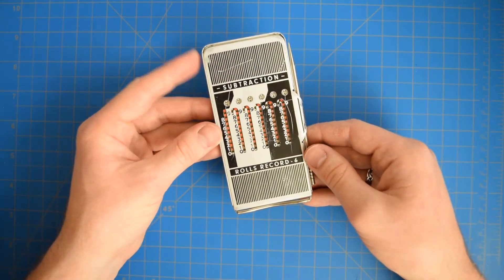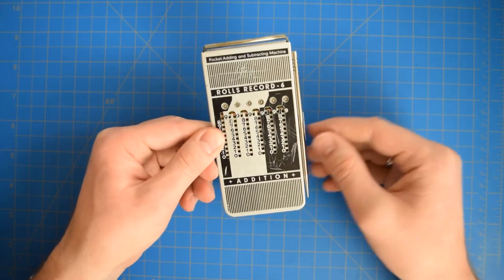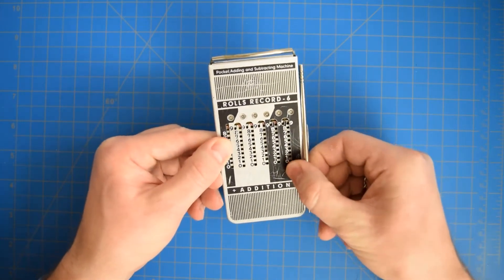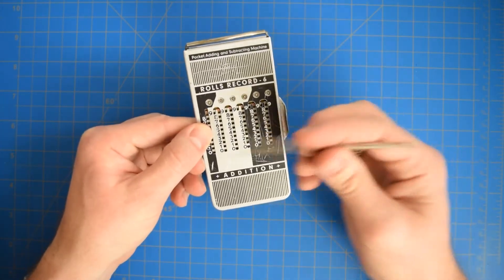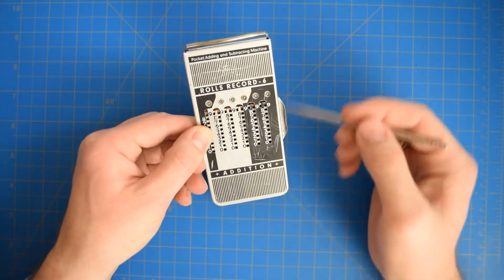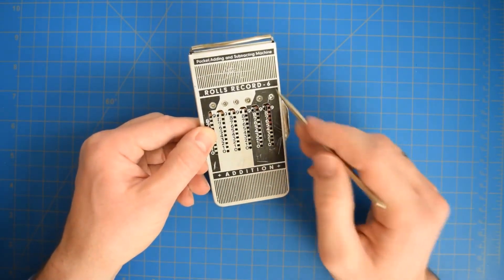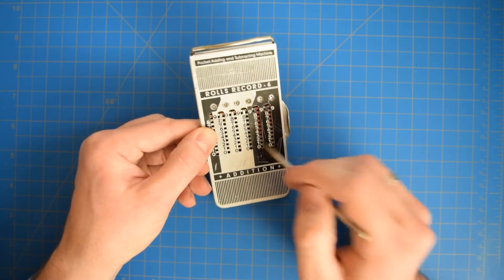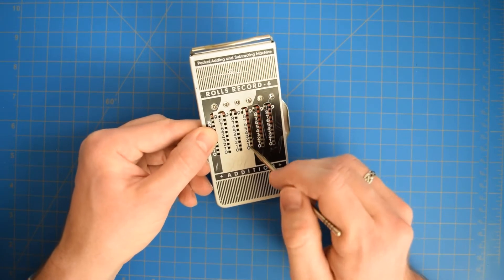The back here says subtraction, in the front addition, so we can do some addition here. Handy stylus in the side, thick metal thing. We can start out with a number, say 5, 75, 675.